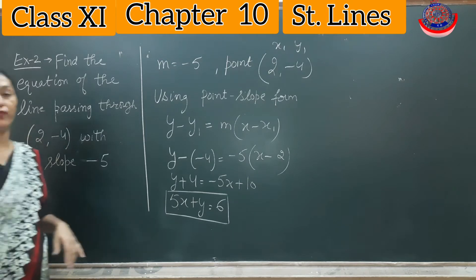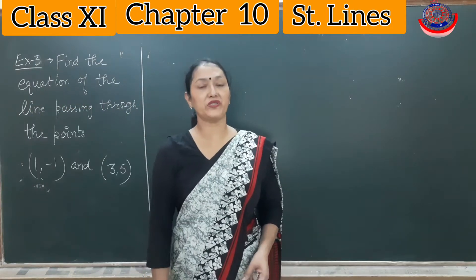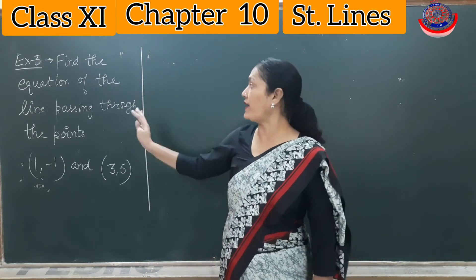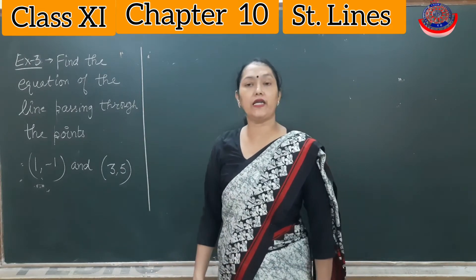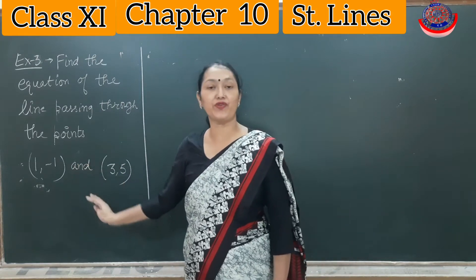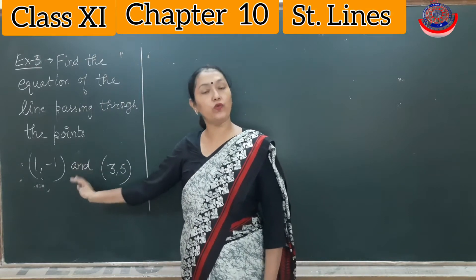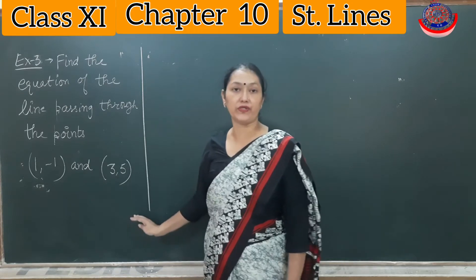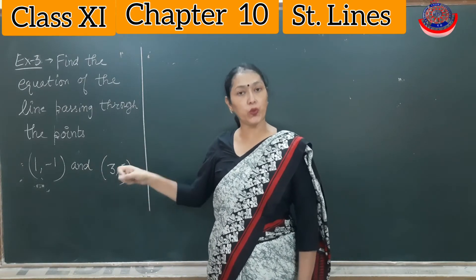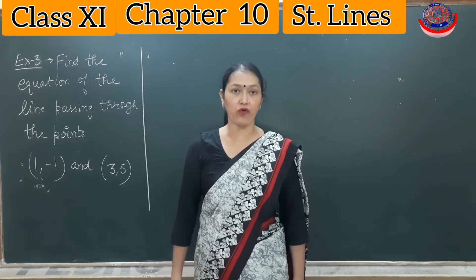In example 3, we are asked to find the equation of the line passing through the two given points (1, -1) and (3, 5). Two points are given, so we will use the two-point form.